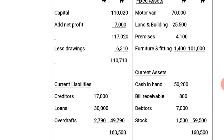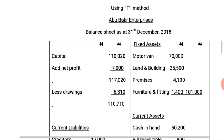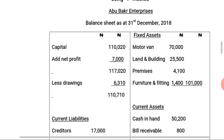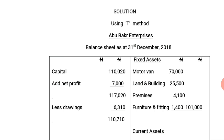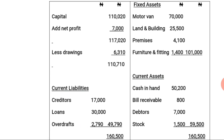As we know, in a balance sheet the total on the right-hand side must equal the total on the left-hand side. As clearly shown, we have 160,500 Naira on both sides. That is how to prepare a balance sheet using the T-format.